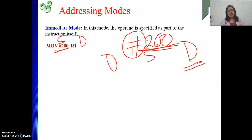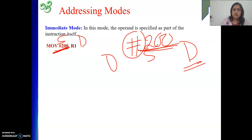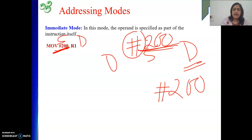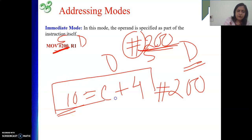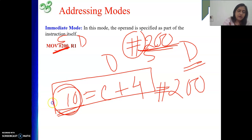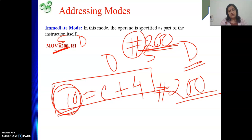An important point: an immediate operand should never appear in the role of destination. This is well understood — you cannot store something into a constant. To store something, it should be a placeholder, such as a memory location or a register. In high-level language, you would never write '10 = c + 4'. If you compile that, you get an l-value error — a memory location is required on the left-hand side of an assignment statement.